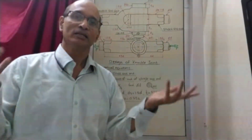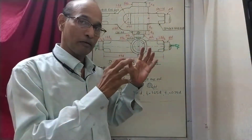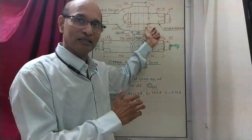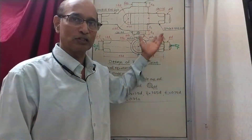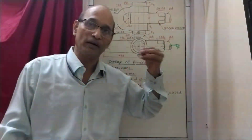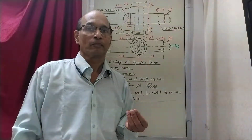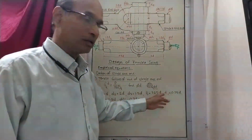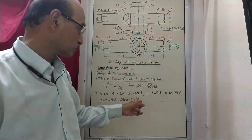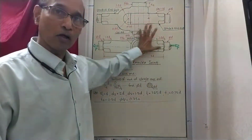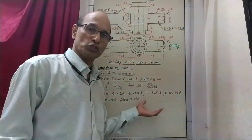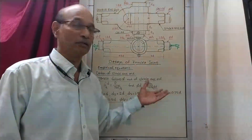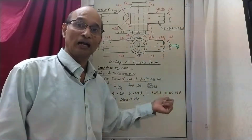Once dimensions are there the design is over in the sense that you can make the parts. But does this mean the work is really over? The answer is no. Although we have got the dimensions, we do not yet know whether the various parts with those dimensions are safe or not. Last time we found each dimension by applying stress equations. Now here the dimensions are available from empirical equations, but we must still check whether they are safe.